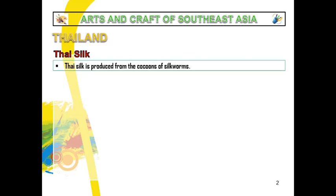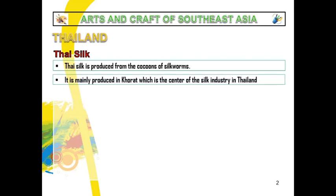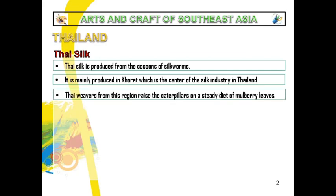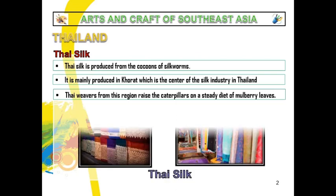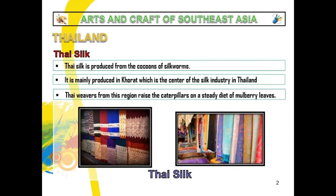Though it is called silkworms or worms, it is a family of caterpillar — basically, the last cycle of this silkworm is a moth, which is a relative of a butterfly. It is mainly produced in Korat, which is the center of the silk industry in Thailand. To maintain good quality of silk, they feed the silkworms mulberry leaves only. These are examples of silk textile made from Thailand.